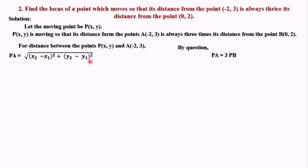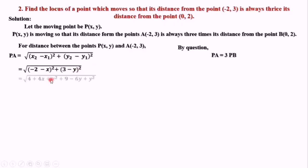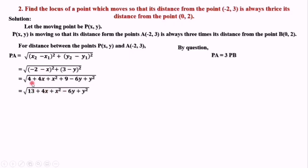We calculate PA first. Since PA is the distance between P and A, we use the distance formula: PA = root under (x2 - x1)² + (y2 - y1)². Here x1, y1 is P(x, y) and x2, y2 is A(-2, 3). After substitution and simplification — using (a + b)² for the first part and (a - b)² for the second part, taking minus common — 4 and 9 get added to give 13. This is the expression for PA.